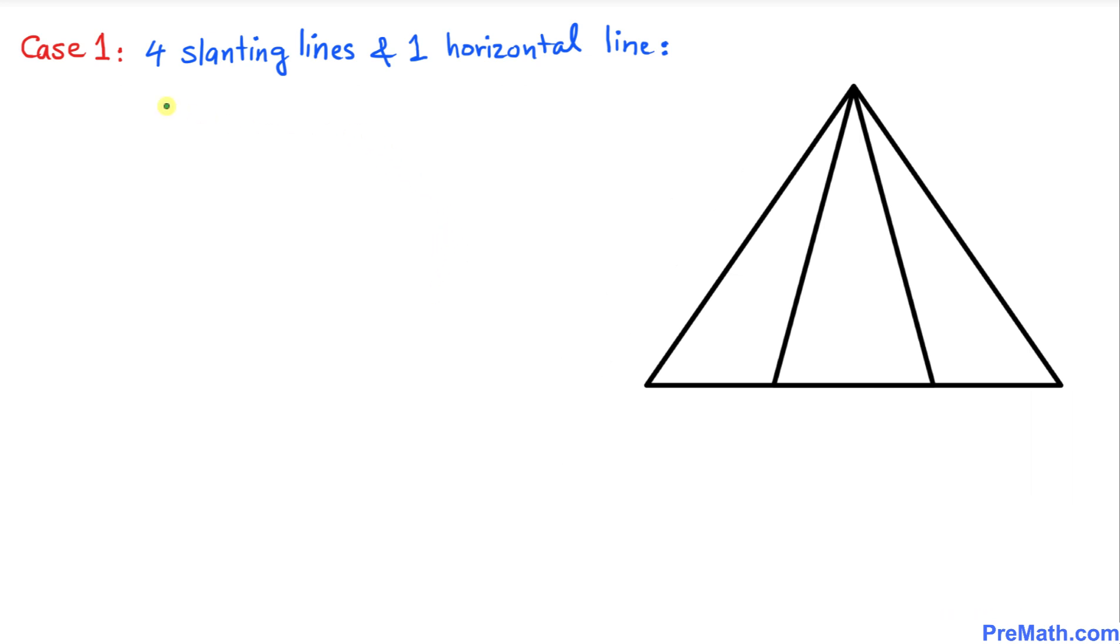Let's get started with the very first scenario. In this case we have four slanting lines, that means they are going from up top to bottom, up and down, and there's one horizontal line as you can see over here. Now we want to find how many triangles are in this figure. Let me give you an easy way.